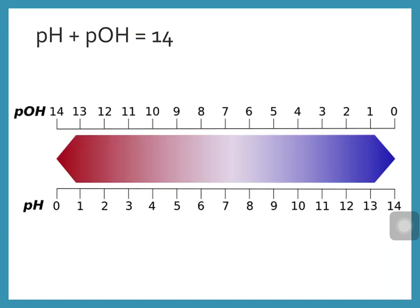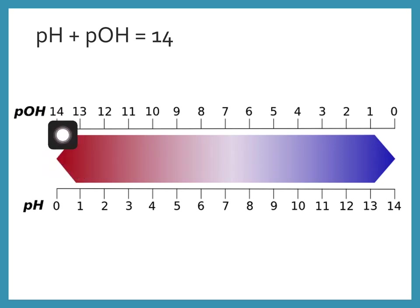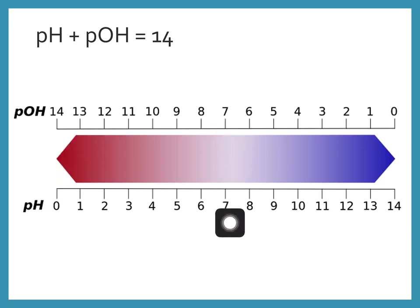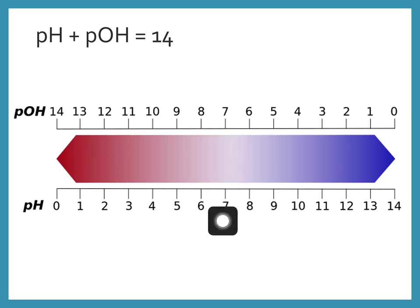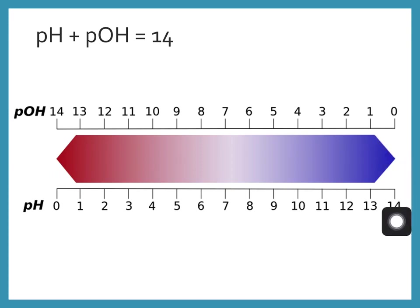Here we see the pH scale which we're familiar with from earlier grades, and pOH is the reverse of that. A pOH of 14 corresponds to something acidic, 7 is neutral (since 7 + 7 = 14, reflecting the relationship between pH and pOH), and a low pOH of 0 means a high pH — something that is basic.